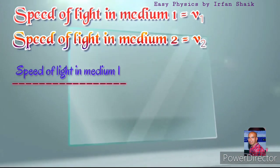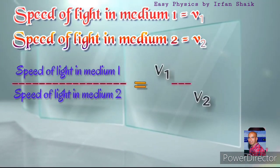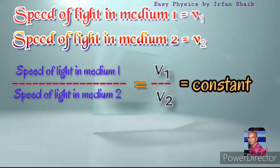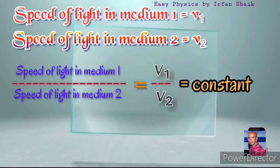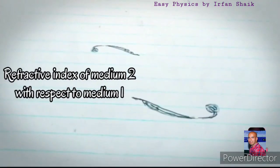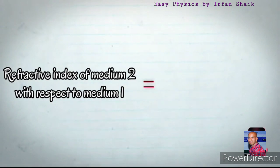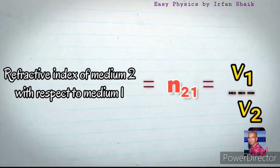The ratio of the speed of light in medium 1 and the speed of light in medium 2, that is V1 by V2, is a constant. So the refractive index of medium 2 with respect to medium 1, that is n21, equals V1 by V2.